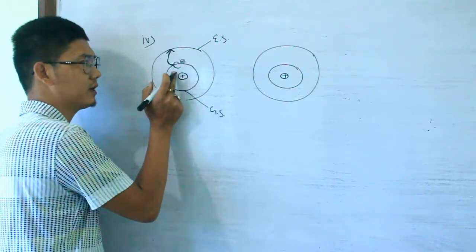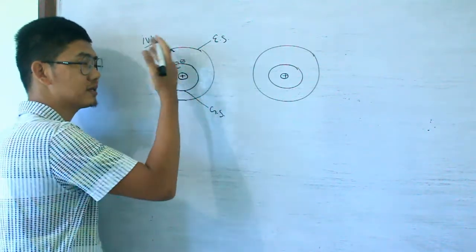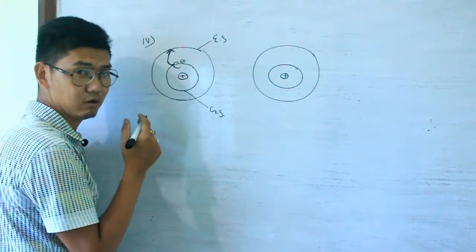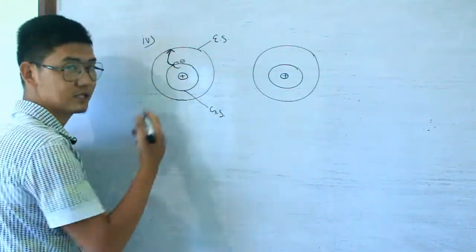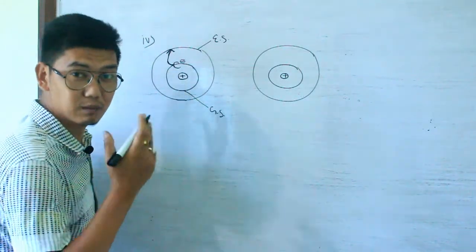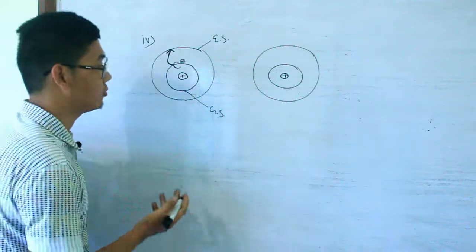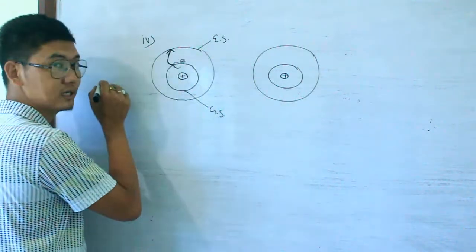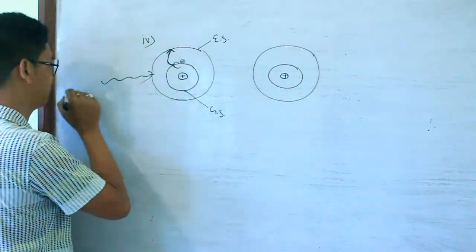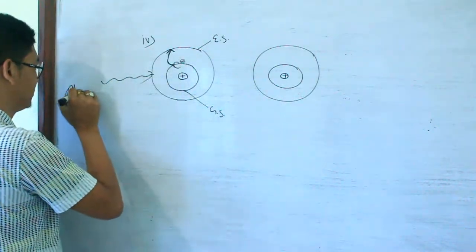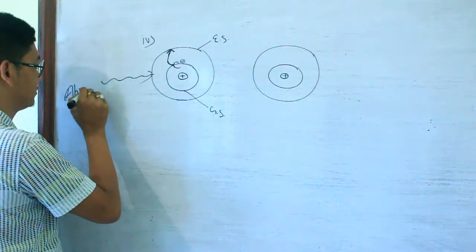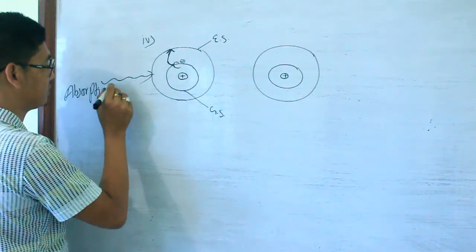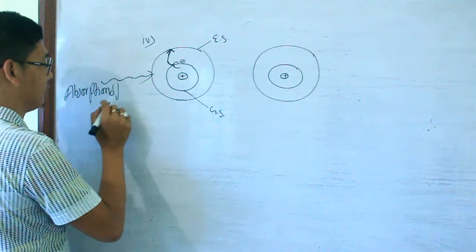What is the lower orbit? High. We have to gain the higher orbit. If we go to the higher orbit, we have to gain energy. So, this energy is absorbed — absorption of energy.